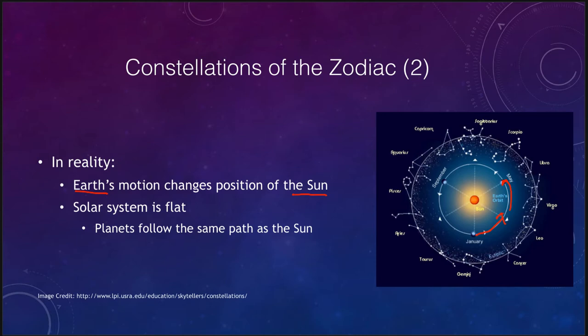So the sun appears to move through the constellations, and your sun sign would be the location of the sun on the day you were born. We also know that the solar system is flat — if you draw it on a piece of paper, that's a pretty good approximation of reality. That means the planets will also follow this same path, so not only does the sun go through these 12 constellations, but so will the moon and the planets.